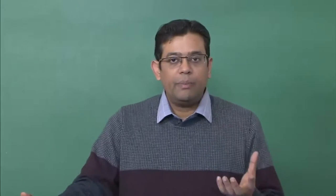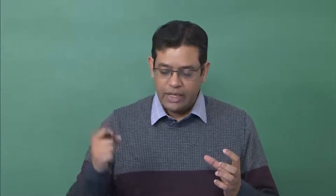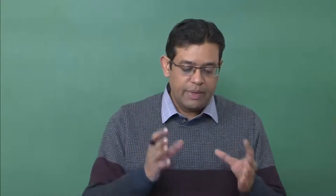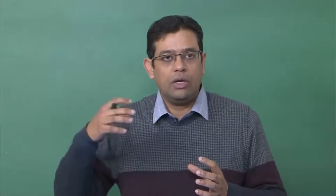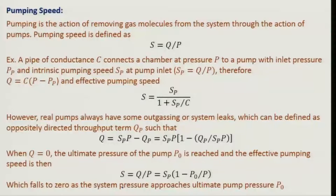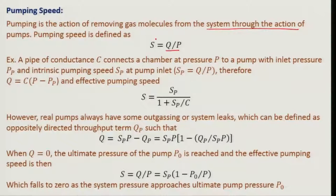To create vacuum, we use some kind of vacuum pump. The vacuum pump's main objective is to remove gas from the vacuum or deposition chamber. The pump is specified by a pumping speed — how much gas it can remove and at what rate. Pumping is the action of removing gas molecules from the system through pumps. Pumping speed S is defined as throughput divided by pressure, and its unit is volume per second.